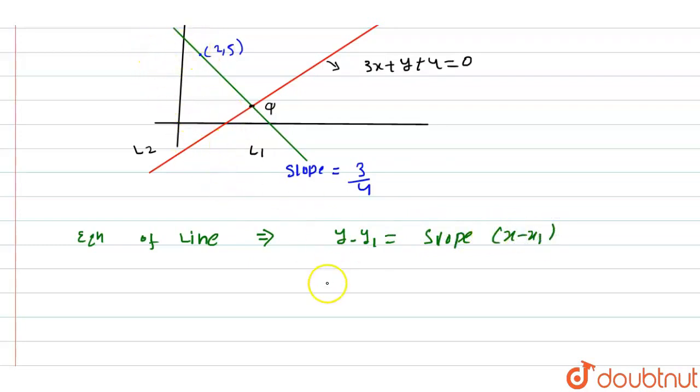Point (2,5) passes through line L1, so we have y - 5 = 3/4 × (x - 2).